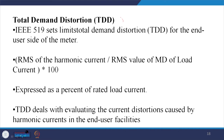Total Demand Distortion — TDD — is a commercial term used in utility settings. IEEE 519 also sets limits for TDD, measured at the end-user meter. It is the RMS of the harmonic current divided by the RMS value of the metered load current, times 100 percent. TDD tells how much demand you want and how much distorted power you receive.